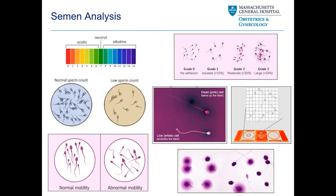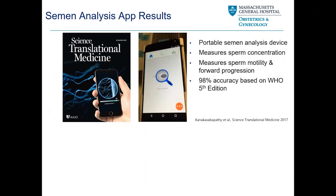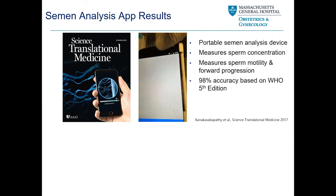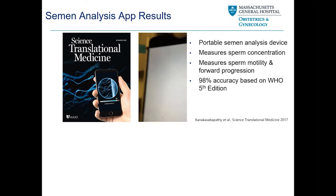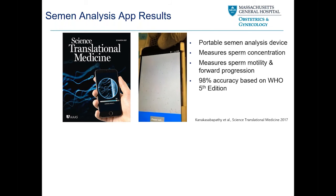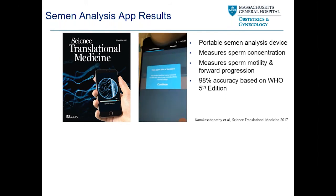Starting with semen analysis: when we do semen analysis, the majority is done visually — sperm counts, assessing motility, grading sperm, looking for agglutination. Sometimes we do live-dead staining, hyaluronic binding assay for functional assays, and even DNA fragmentation. A few years back, we developed a smartphone application that allowed men to do a semen analysis from home. We used a 3D printer to build a case and changed some lenses, and for under $3 we built a handheld CASA machine with 98% accuracy based on WHO fifth edition, measuring sperm motility, concentration, and velocity.